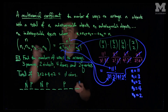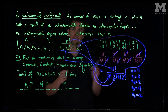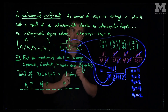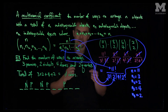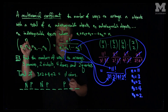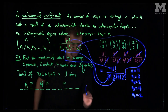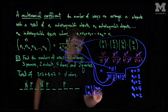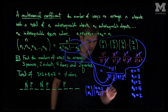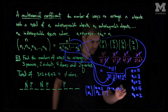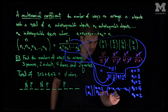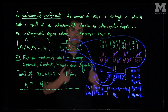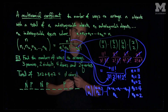So when working with multinomial coefficients, we can memorize the formula: n choose n1, n2, n3, all the way up to nk equals n factorial over n1 factorial times n2 factorial all the way up to nk factorial. Alternatively, we can think through it logically: starting with n choose n1, then n minus n1 choose n2, continuing down to n minus n1 minus n2 minus nk-1 choose nk. The same reasoning applies, and a simple example helps illustrate the number of indistinguishable classes and ways to arrange them.